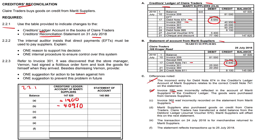Item (c): invoice 360 was incorrectly recorded on the statement from Mariti Suppliers. Invoice 360 shows 20,250 in our records but 50,250 on the statement — a difference of 30,000. This wouldn't affect our creditors ledger; it affects the statement of account. The difference between 50,250 and 20,250 gives us plus 30,000 on the statement side.